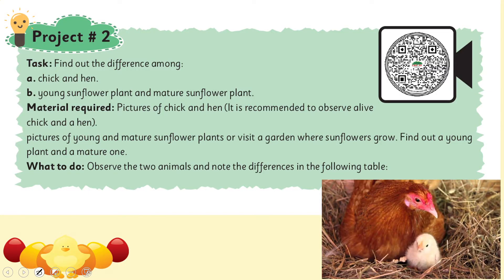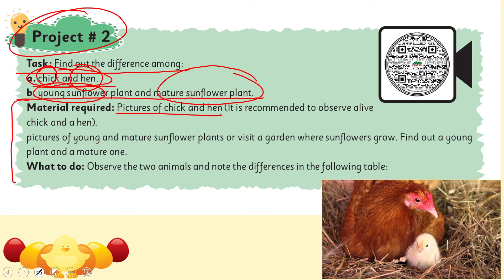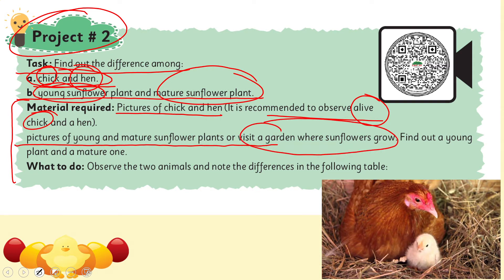Now it is time for Project Number 2 from your book. The task is to find out the differences between a chick and a hen, and between a young sunflower plant and a mature sunflower plant. The materials required are pictures of a chick and hen. Teachers can also show a live hen and chick, and pictures of young and mature sunflower plants, or visit a garden to find sunflowers.